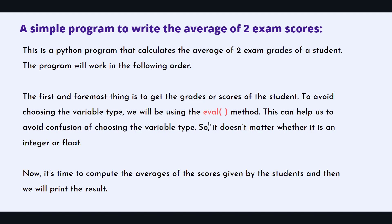Whatever type of data we want, eval will convert it. For example, if the user gives 12 as input, we know implicitly that input is a string. Instead of using integer or float methods, we just use eval. If we want to add that 12 to some number, eval will convert it to integer if needed, or float if needed. So you don't have to know the type of data — eval handles it.